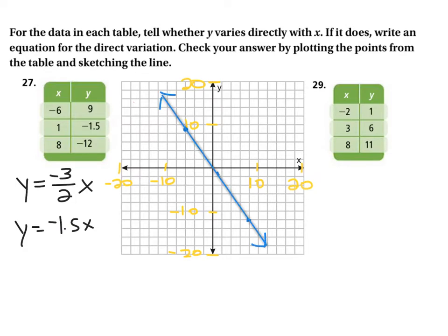You can see they all fall in a line. Notice this is a negative slope — as the x value increases, the y value decreases. As x goes from negative to positive, y goes from positive to negative. When one increases as the other decreases, you have a negative slope that drops as you move to the right.